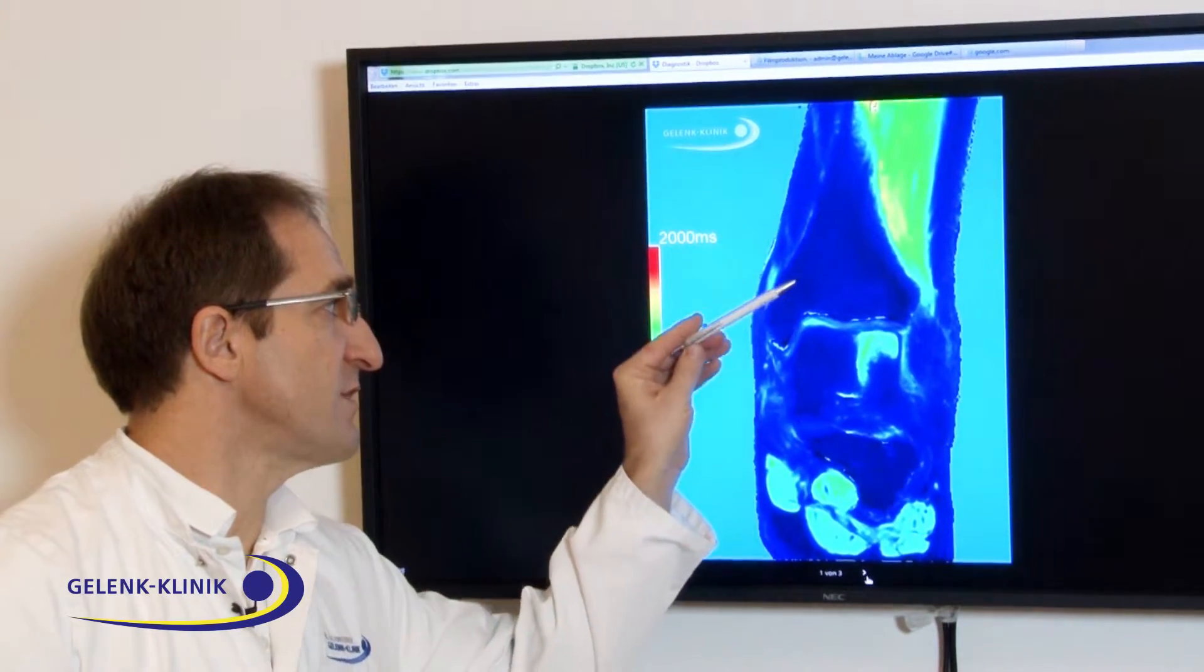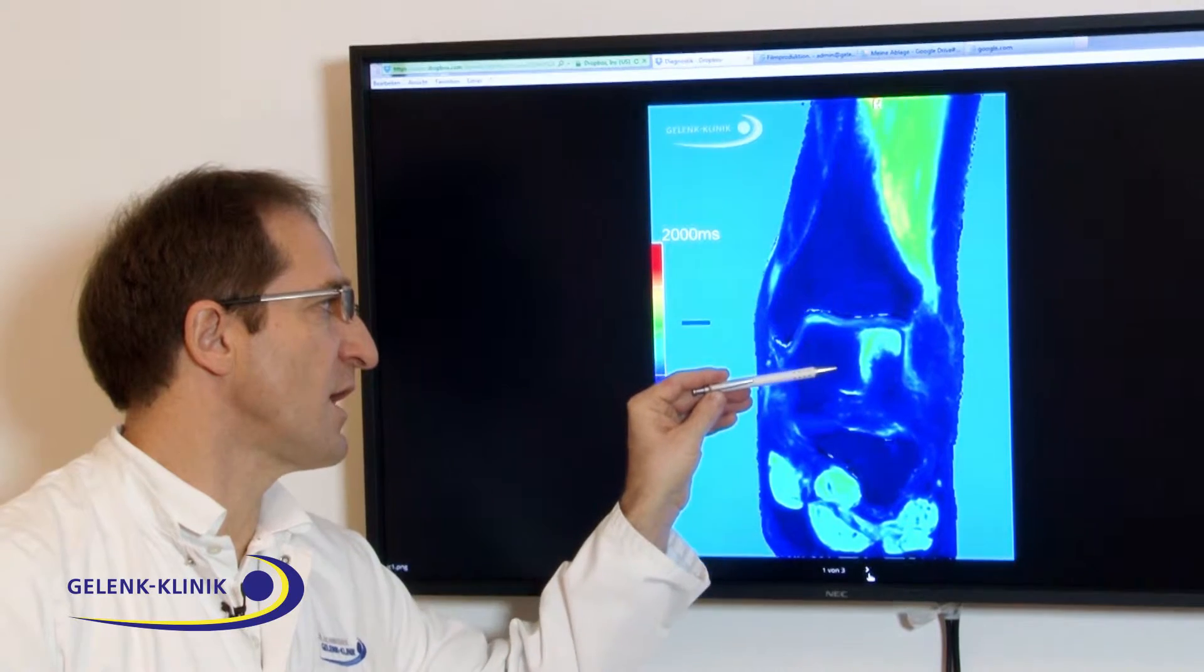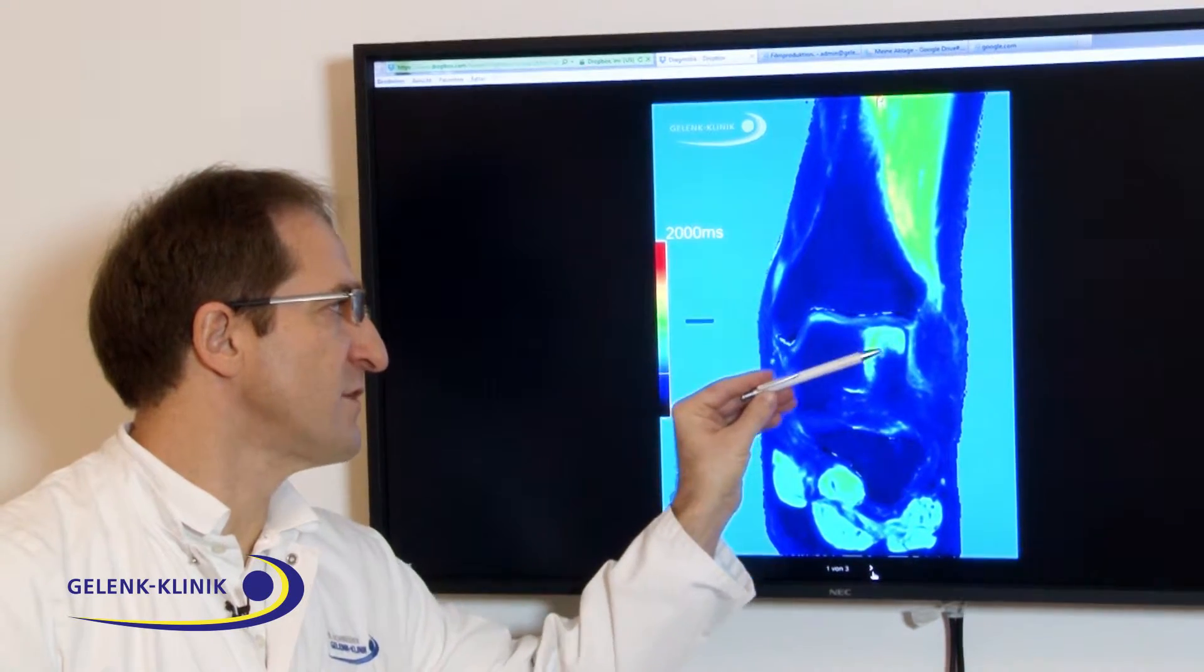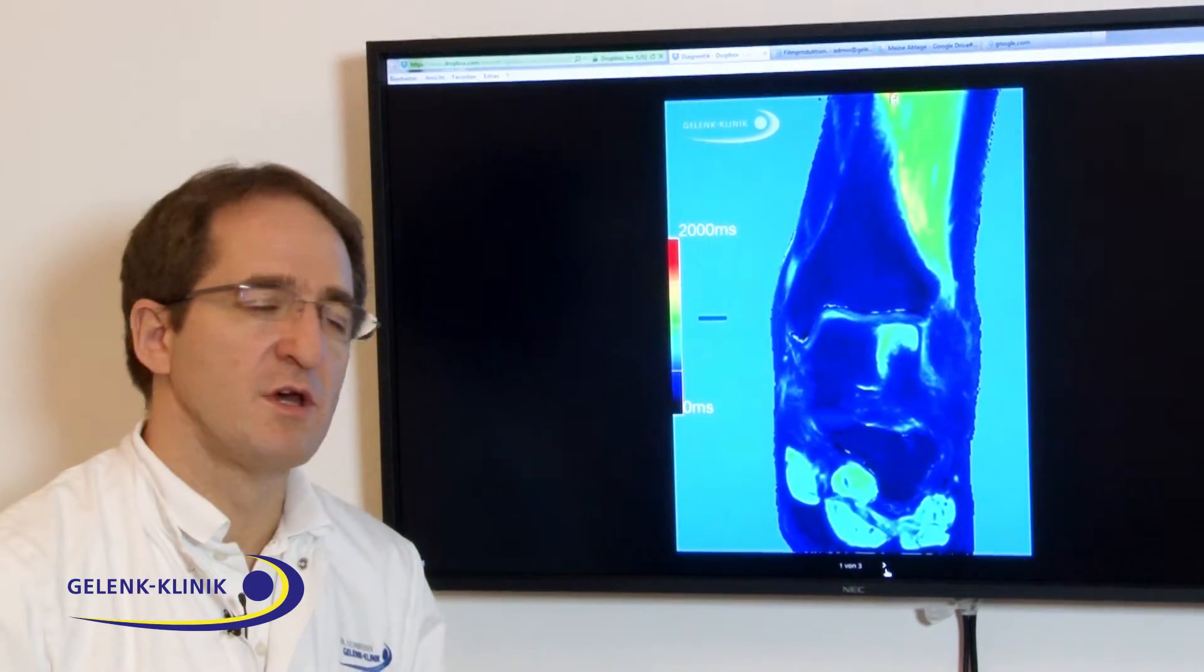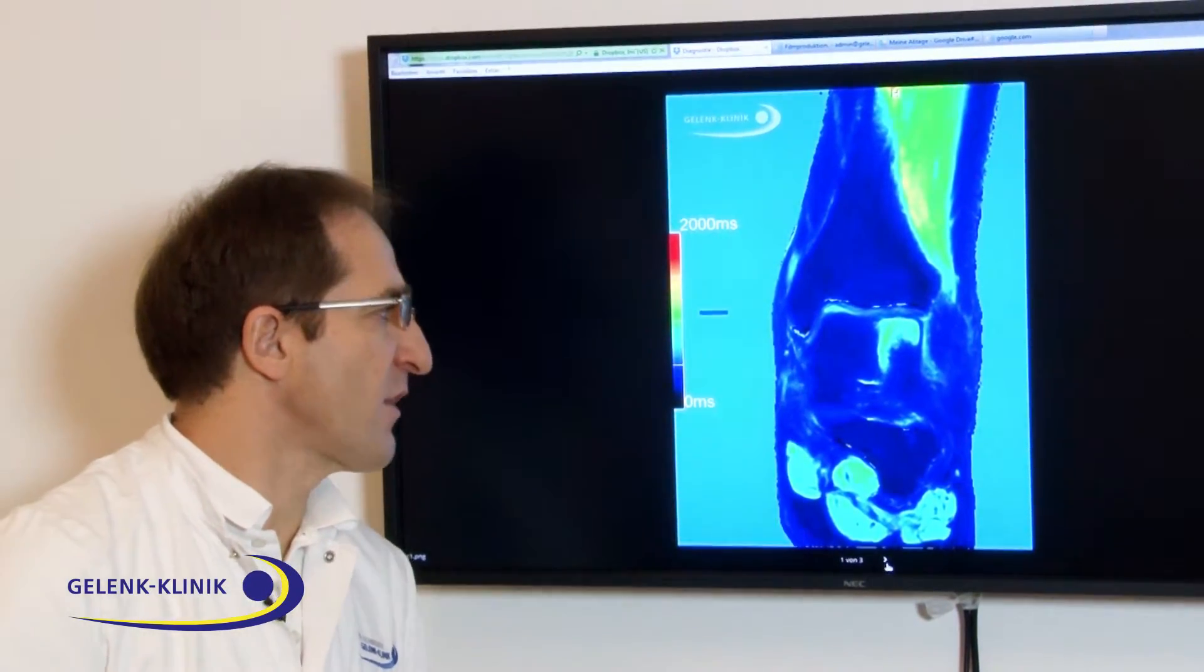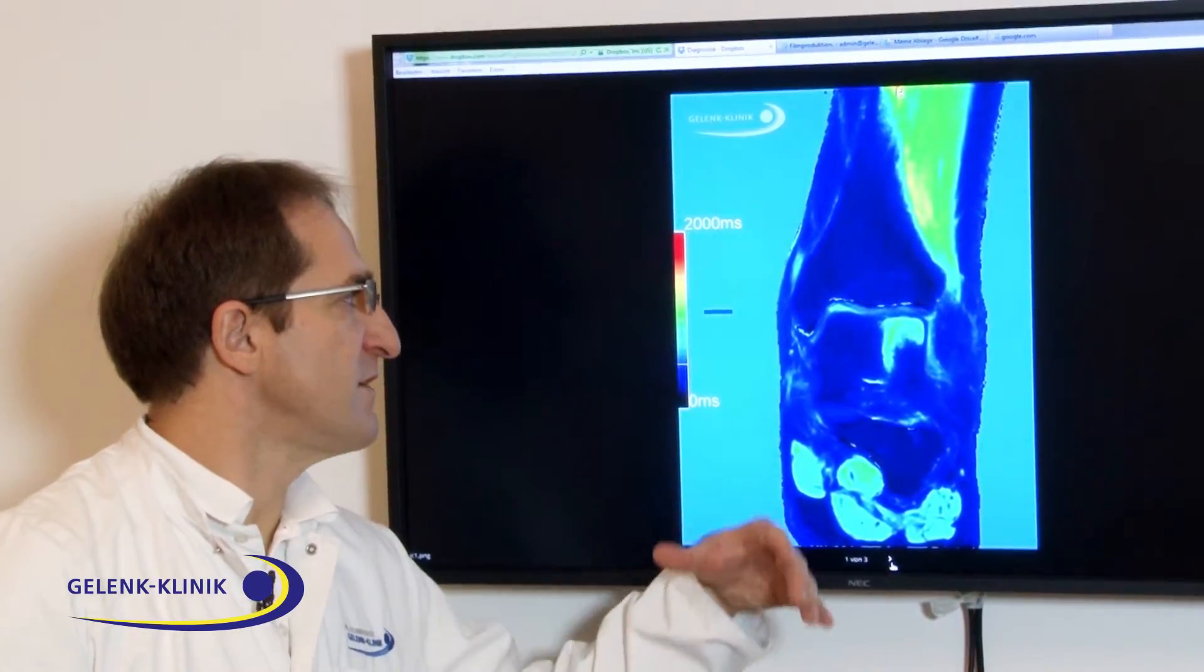On this picture you see the ankle joint, the tibia and the bone of the talus, and you see a cartilage change on the surface of the bone. We can, on another view, always see it in both sides.